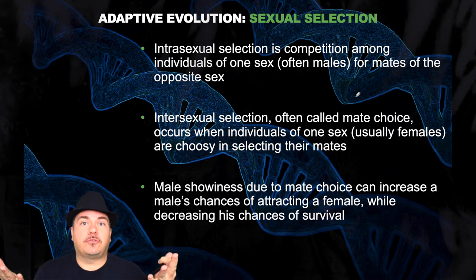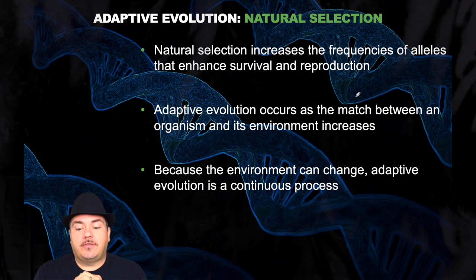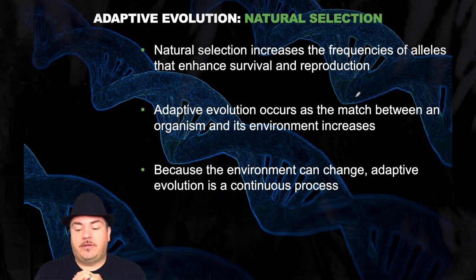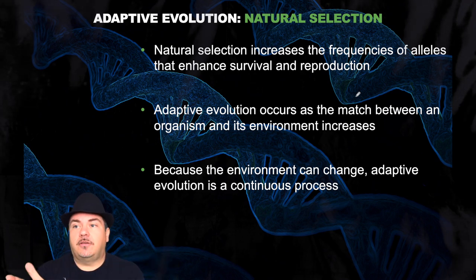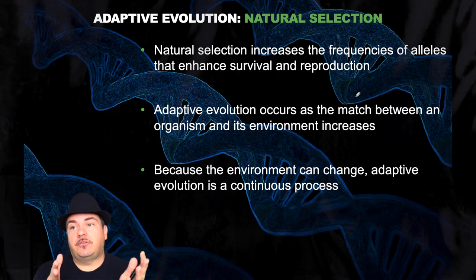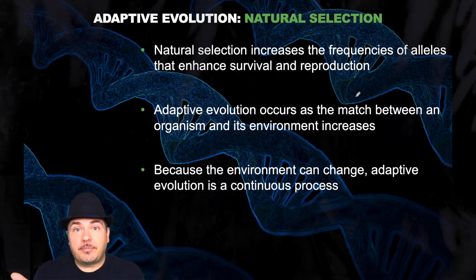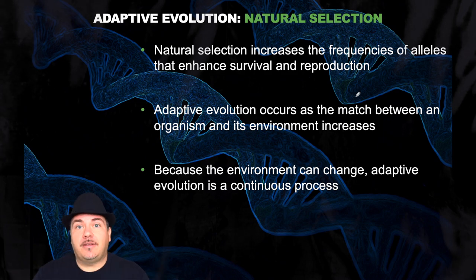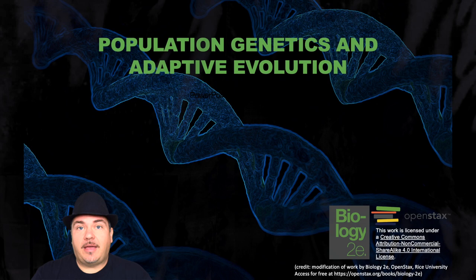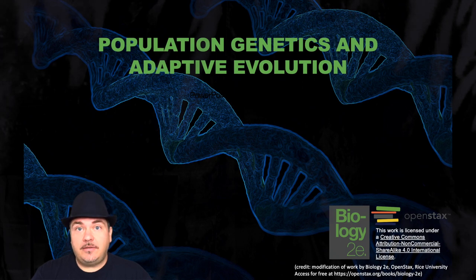Natural selection increases the frequencies of alleles that enhance survival and reproduction. Adaptive evolution occurs as the match between an organism and its environment increases. Because the environment can change, adaptive evolution is a continuous process. For example, those moths — before the Industrial Revolution, the lighter shaded moths could hide better. At the beginning of the Industrial Revolution, lots of pollution meant the lighter shaded ones stuck out and the darker ones could hide. Once you start to do cleanups on that pollution, the darker ones could be seen better and the lighter ones could hide. So it can shift back and forth depending on what's happening in the environment. That's the end of your lecture on population genetics and adaptive evolution. In the next set of video lectures, we're going to talk about phylogenies and the history of life. Until then, this has been Dr. Sage.